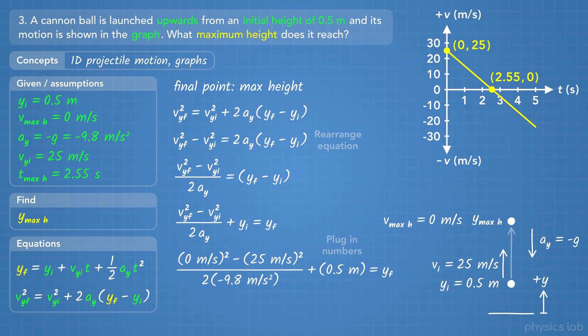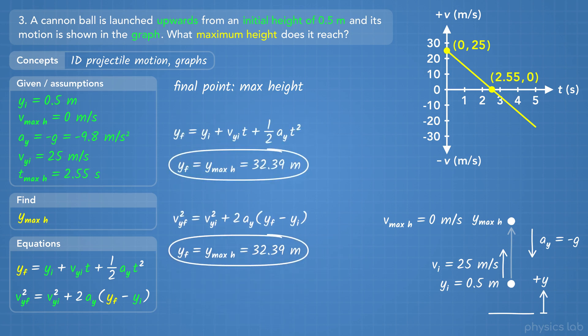Now we can plug in the values that we have for each variable. When we do that, we get 32.39 meters for y final, which is the maximum height. That's the same answer we got before.